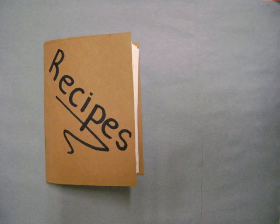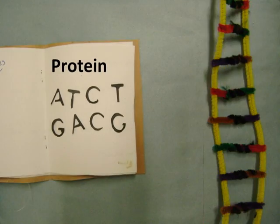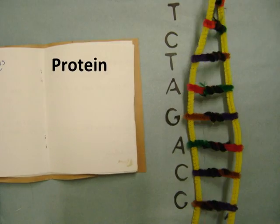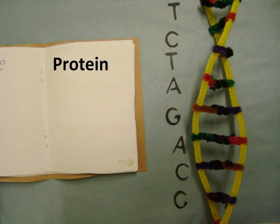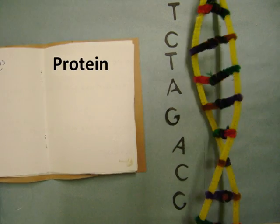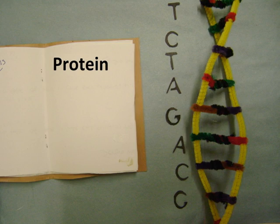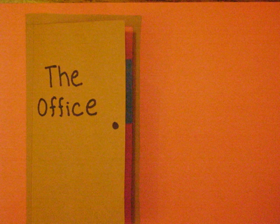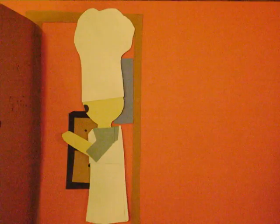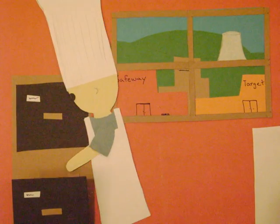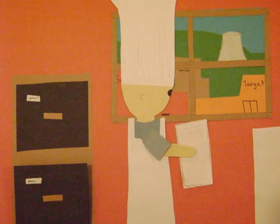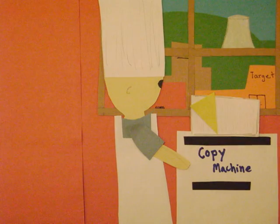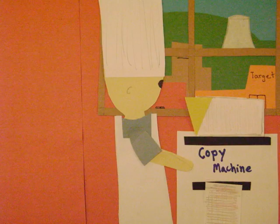All cakes start with a recipe, and the recipe for protein is DNA. Now in the cell bakery, all recipes are kept in the cabinet in the manager's office. The baker must go into the office to get the recipe. The only rule the manager has is that the recipes cannot be removed from the office, therefore our baker must make a copy of the recipe in order to use it.